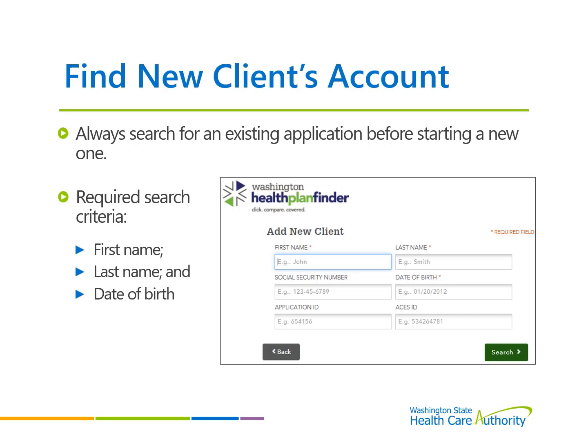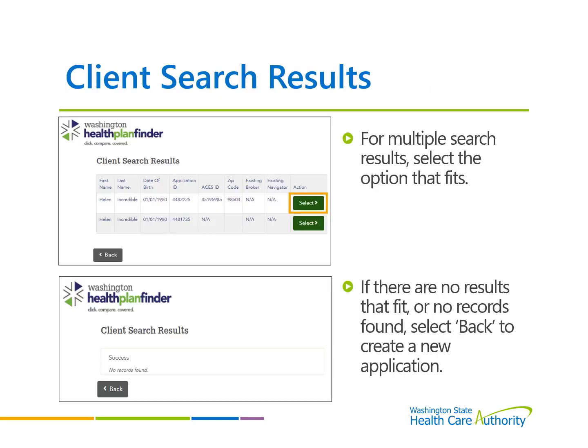To prevent system errors or the creation of duplicate applications, always search for a pre-existing application before starting a new application. Search by first name, last name, and date of birth. If using immigration documentation to verify date of birth, be aware of the month, date, and year format when searching. When searching, if there are multiple search results, select the option that fits. If there are no results or no results that fit, select the back button to create a new application.